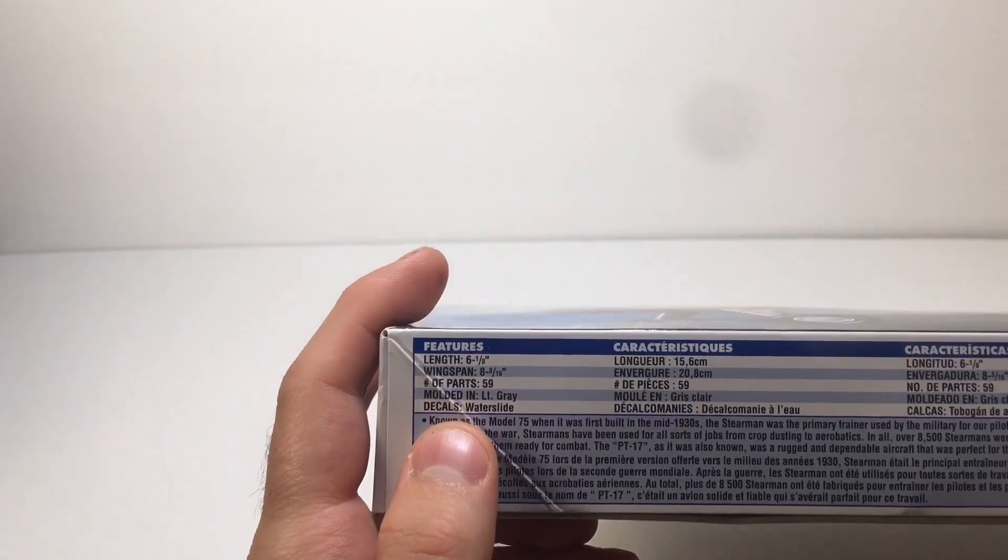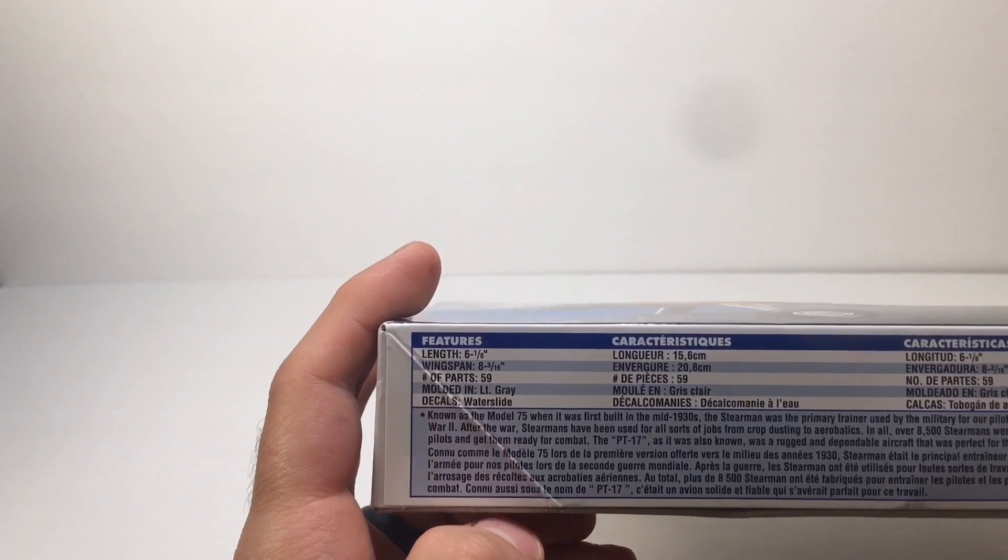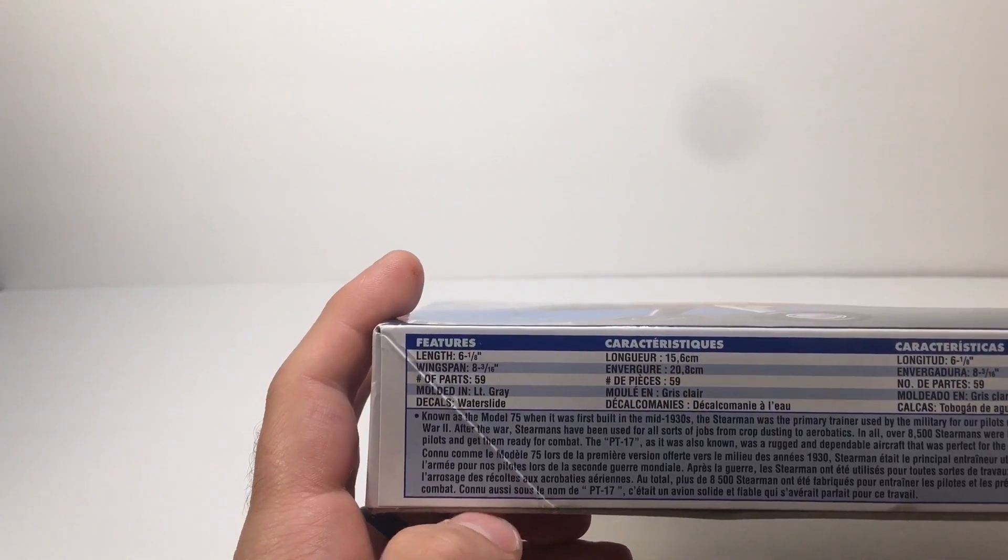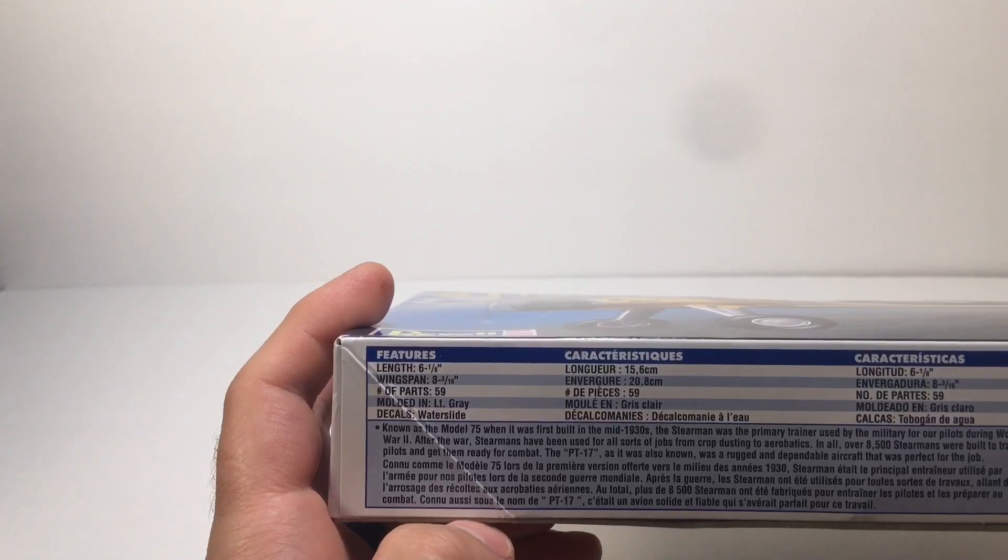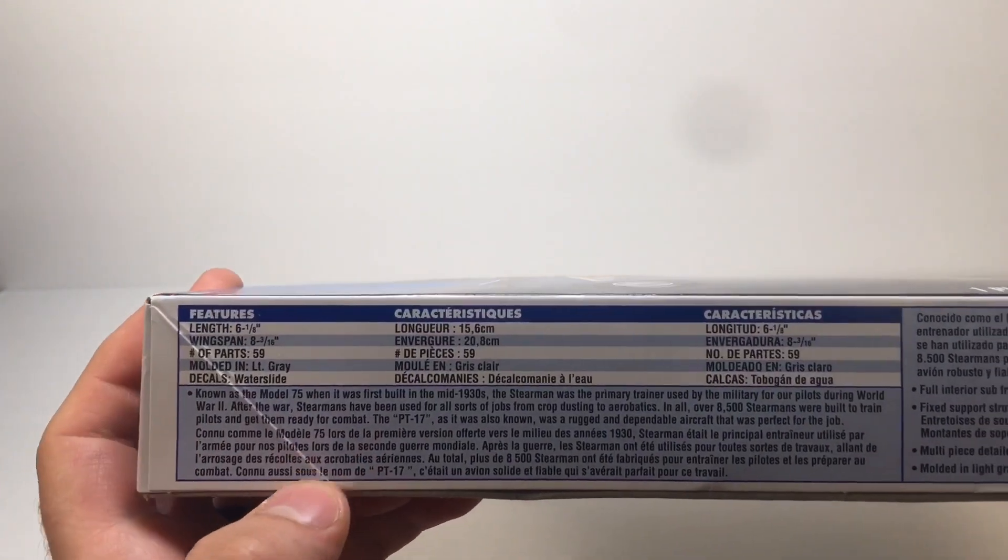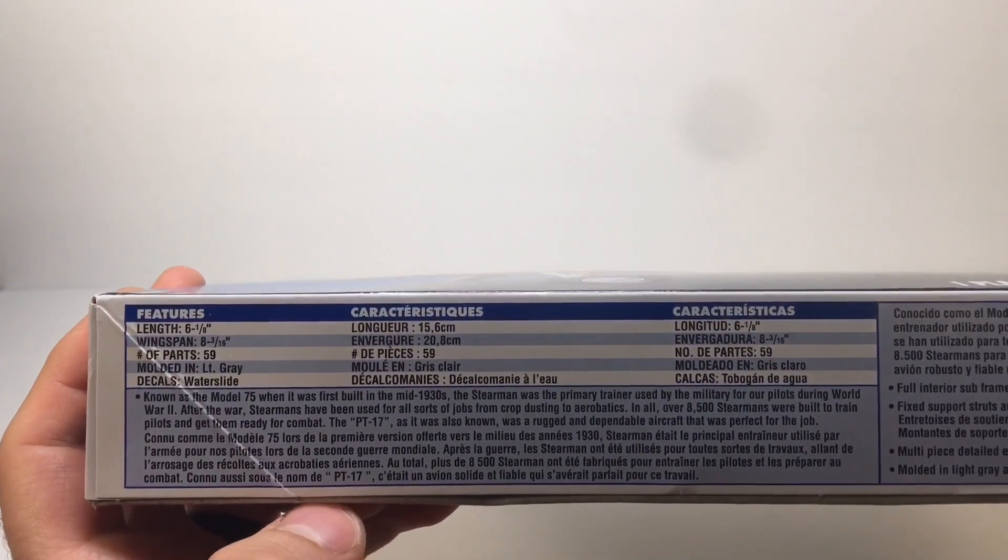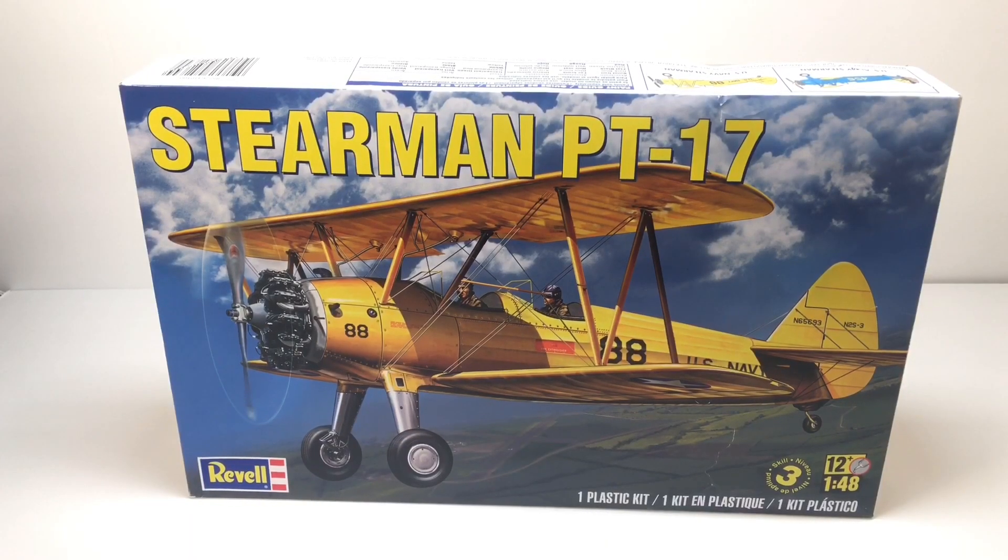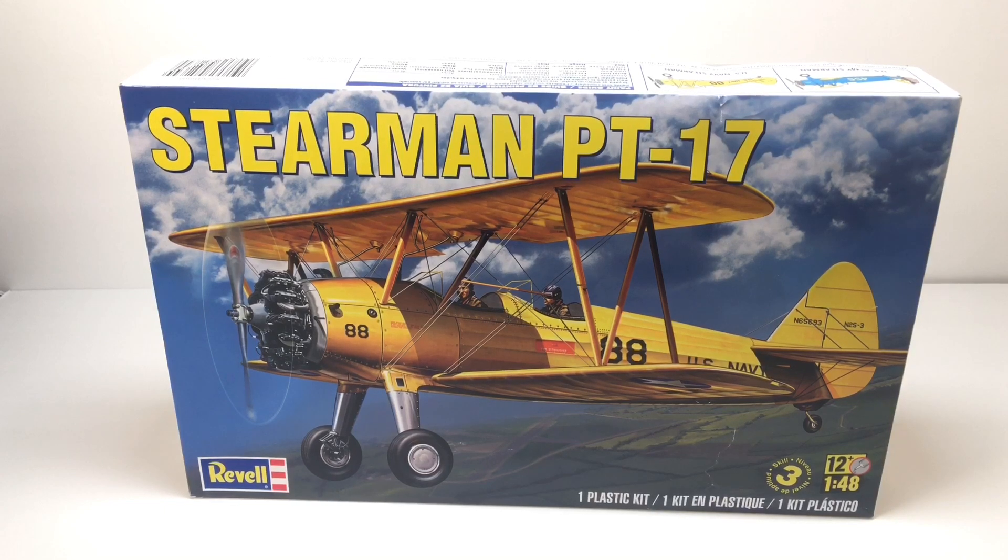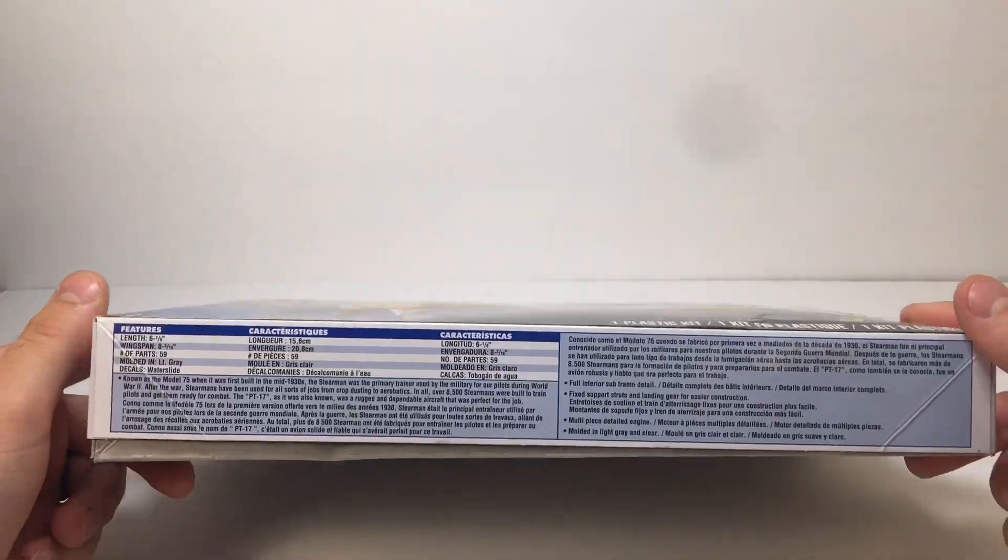The kit is six inches long, the wingspan is eight inches, there's 59 parts, it's molded in light gray. Here's the brief history about the plane. In real life, the plane was 24 feet long, it had a wingspan of 32 feet, it had a seven cylinder radial engine and it had 220 horsepower, and the max speed was 124 miles per hour.